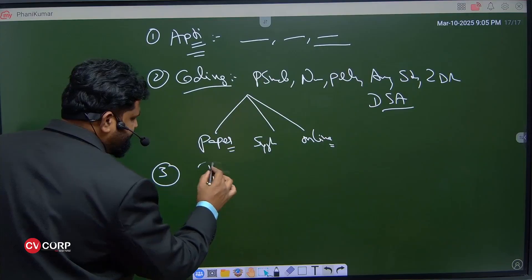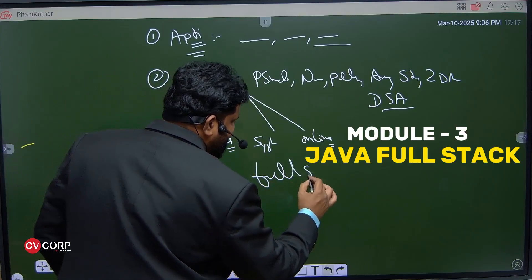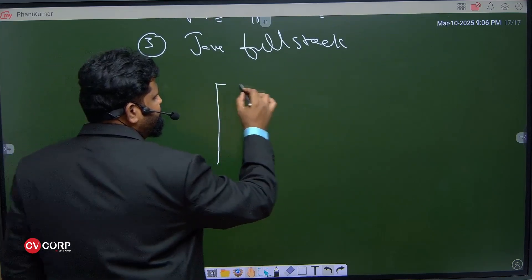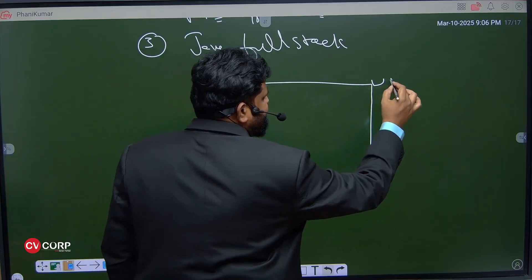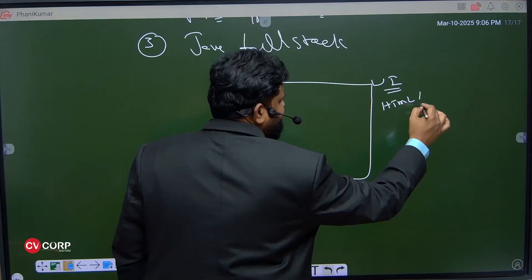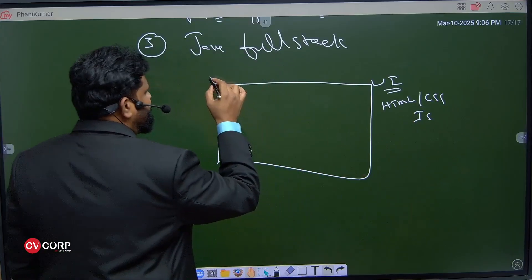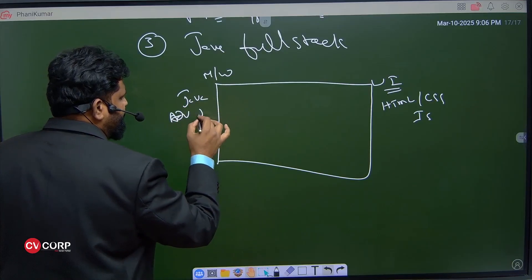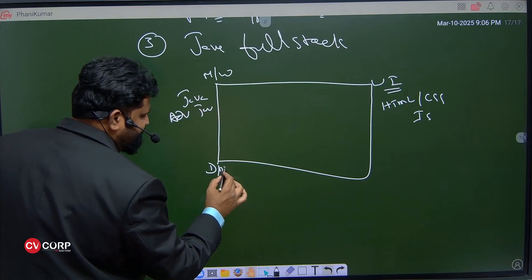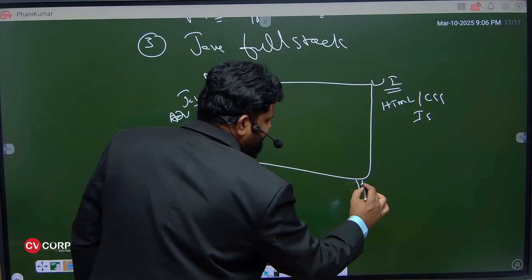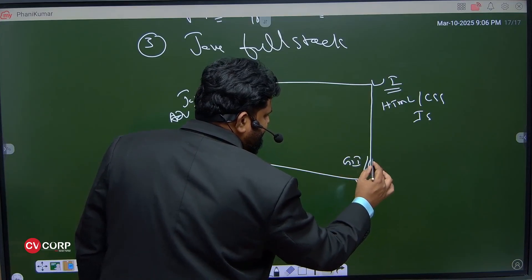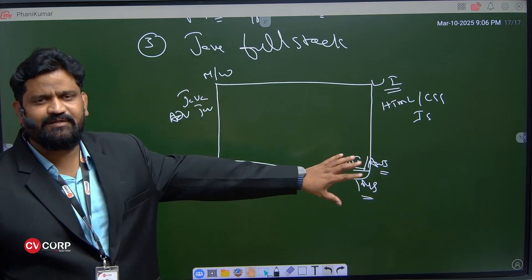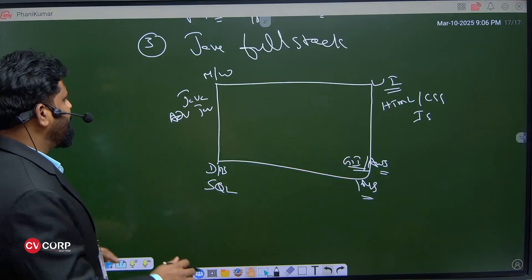Third module, we talk about complete Java full stack. We cover four topics: the entire UI part which is HTML, CSS, JavaScript; the middleware part which is completely on Java and advanced Java; database SQL front end; and Git and AWS - how to host your project. We're going to cover all these things as part of the full stack.